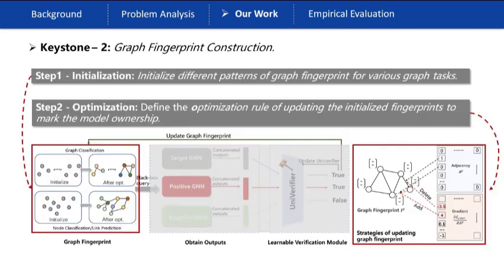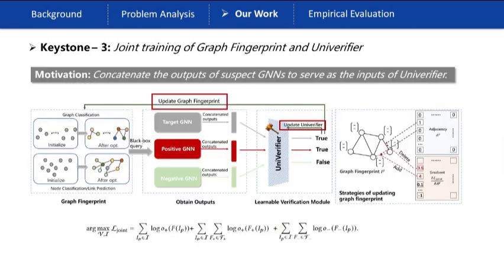The second keystone of GNN-Effingers is to utilize task-agnostic fingerprints and the optimization rule of fingerprints in the form of graphs. In the paper, we initialize different input patterns of fingerprints for various graph tasks. We also define the optimization rule to update the specific inputs to tackle the issue of dense and sparse inputs. Finally, the verifier and the graph fingerprint will be trained jointly.